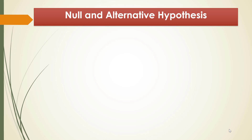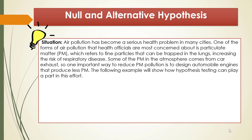First let's take a look at how to define the null and the alternative hypothesis. The alternative hypothesis is also called the alternate hypothesis. Let's look at this situation: air pollution has become a serious health problem in many cities. One form of air pollution that health officials are most concerned about is particulate matter, which refers to fine particles that can be trapped in the lungs, increasing the risk of respiratory disease. Some of the PM in the atmosphere comes from car exhaust.